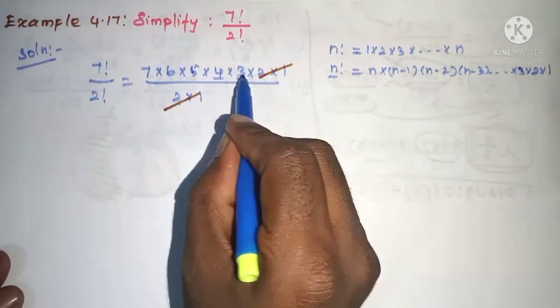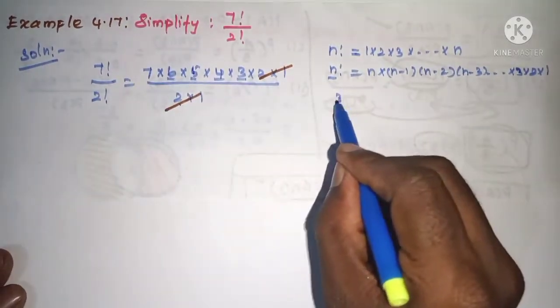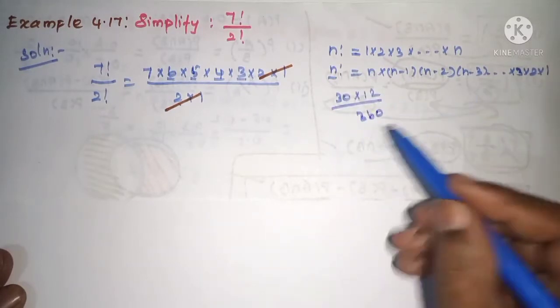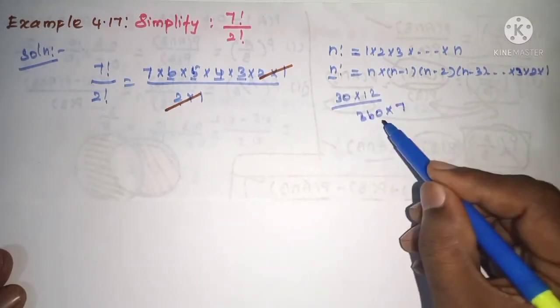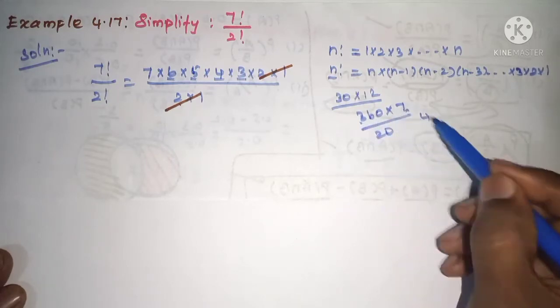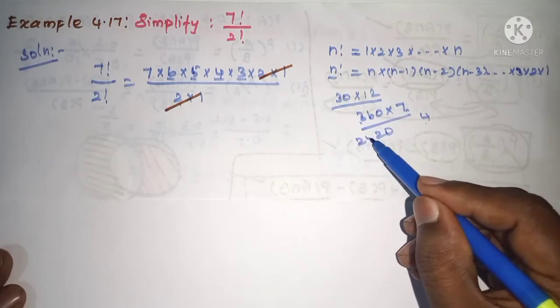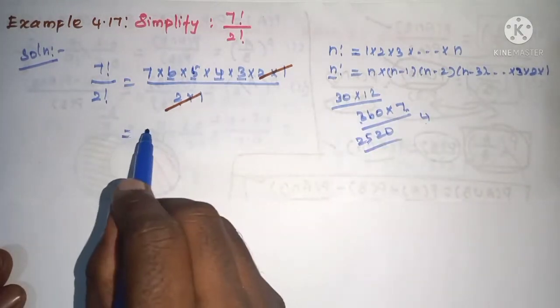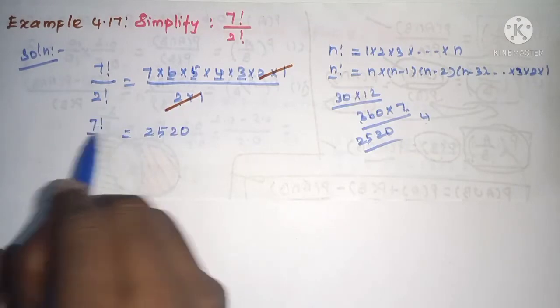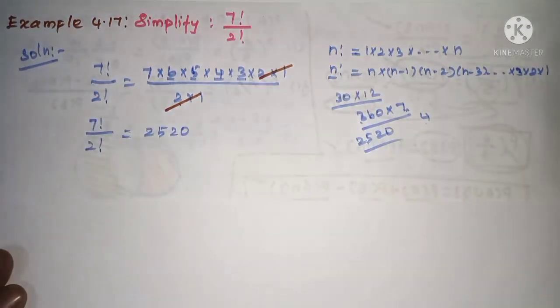See, 4 times 3 is 12. 6 times 5 is 30. So 30 into 12 is 360, into 7 times. Now here is 0, 42, 21, 25, so total 2520 is the answer for 7 factorial divided by 2 factorial. Okay, thank you.